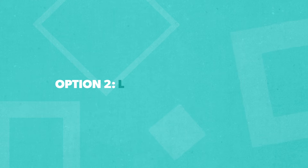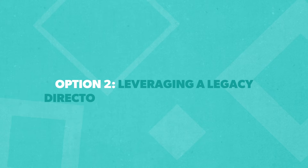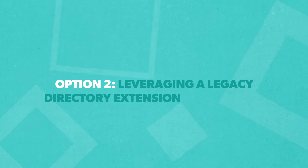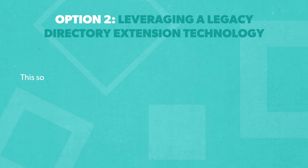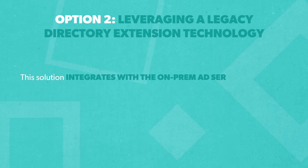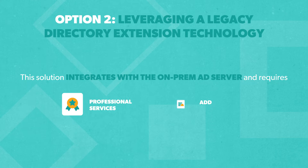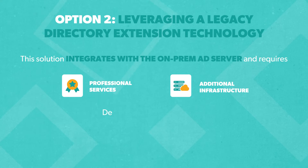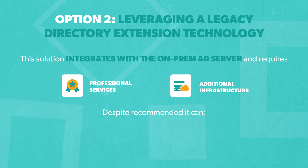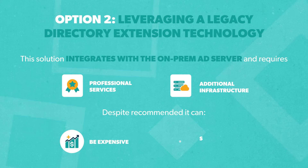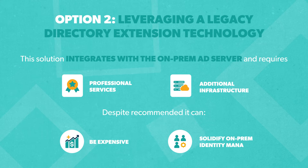Option 2 involves leveraging legacy directory extension technology. This enterprise-grade solution integrates with the on-prem AD server and often requires professional services and additional infrastructure. Although it is recommended by Microsoft's partnership with Apple-centric MDM providers, it can be expensive and further solidify on-prem identity management.